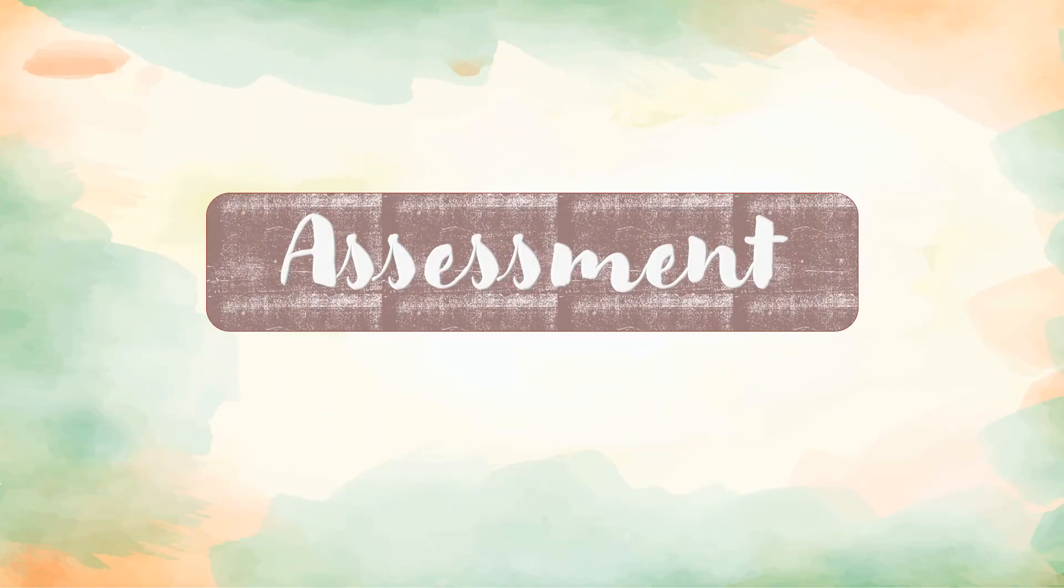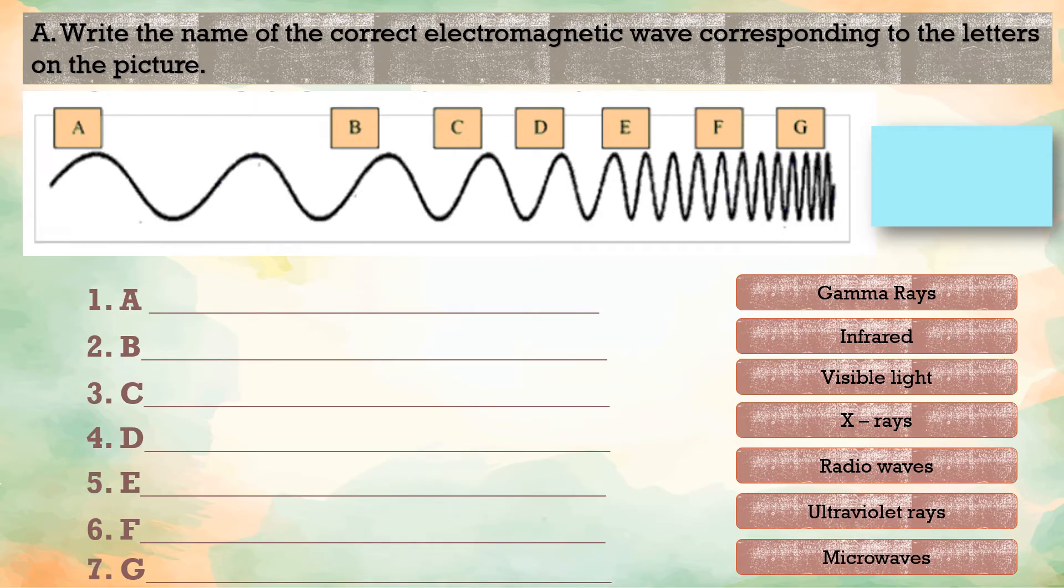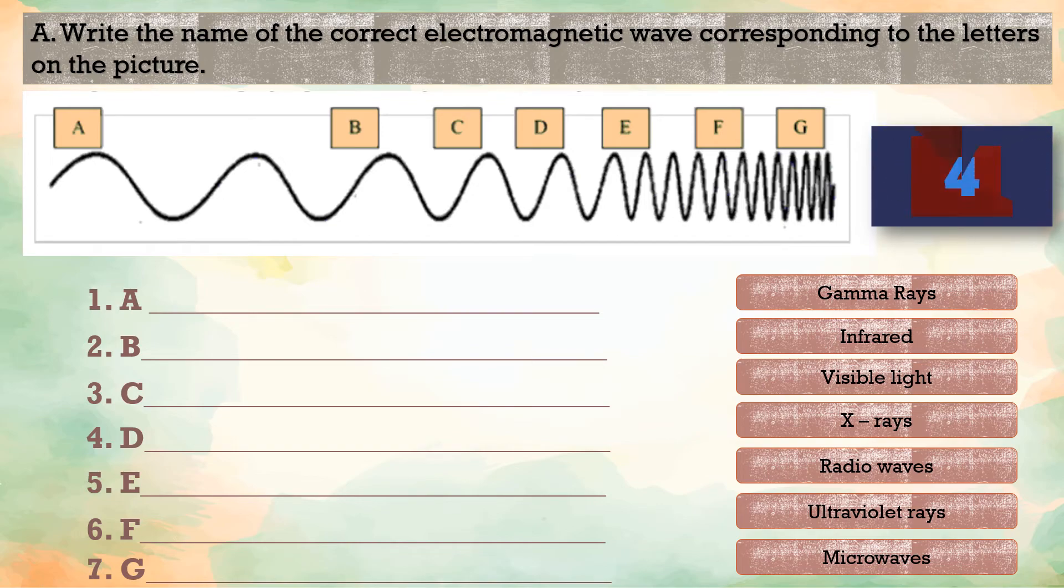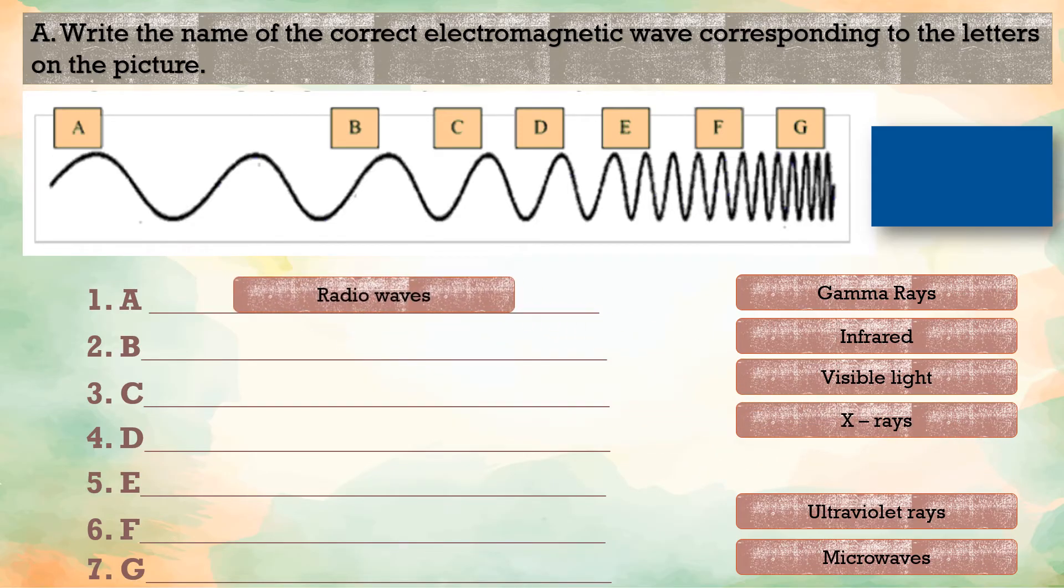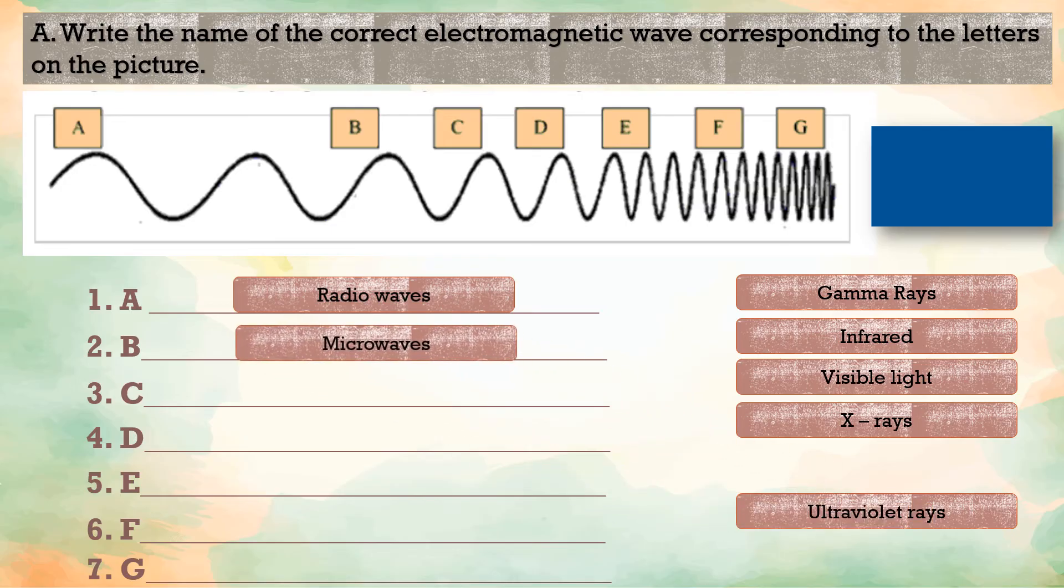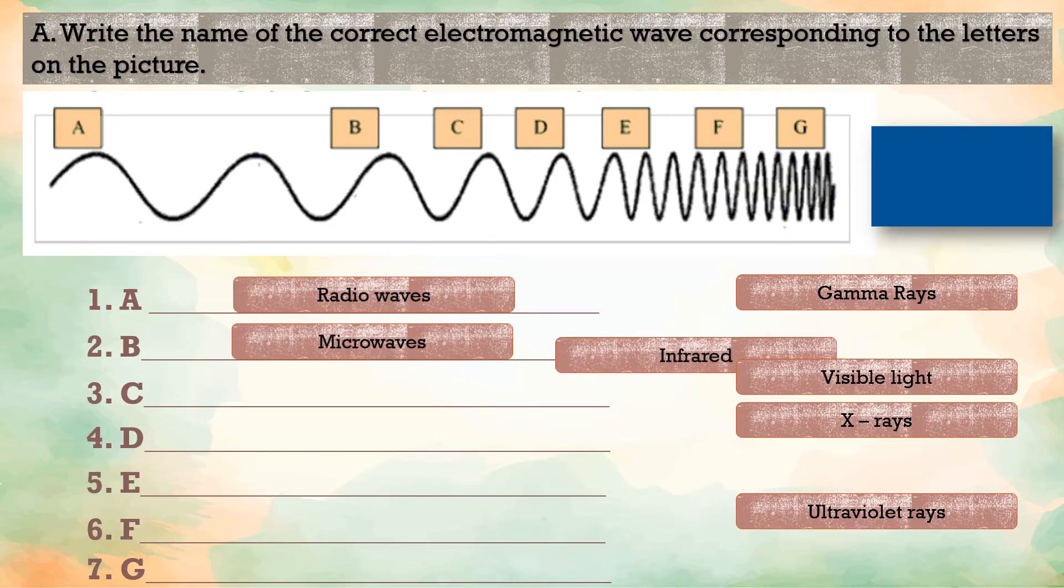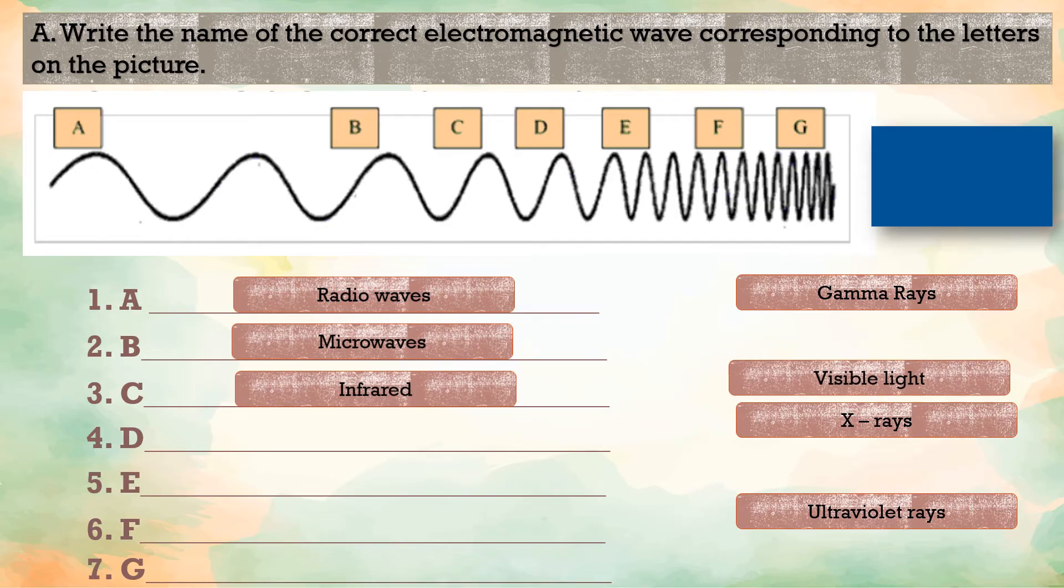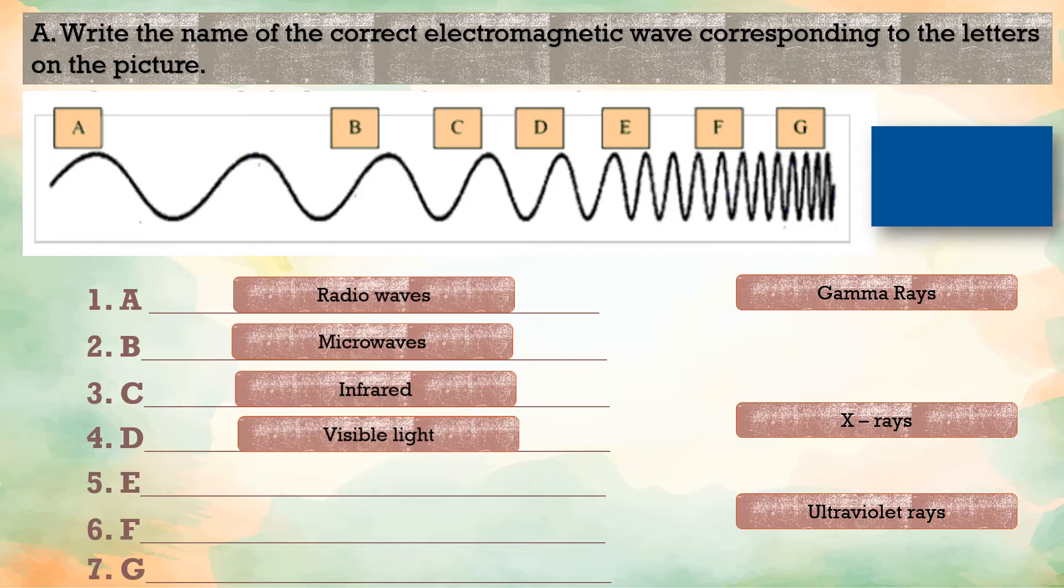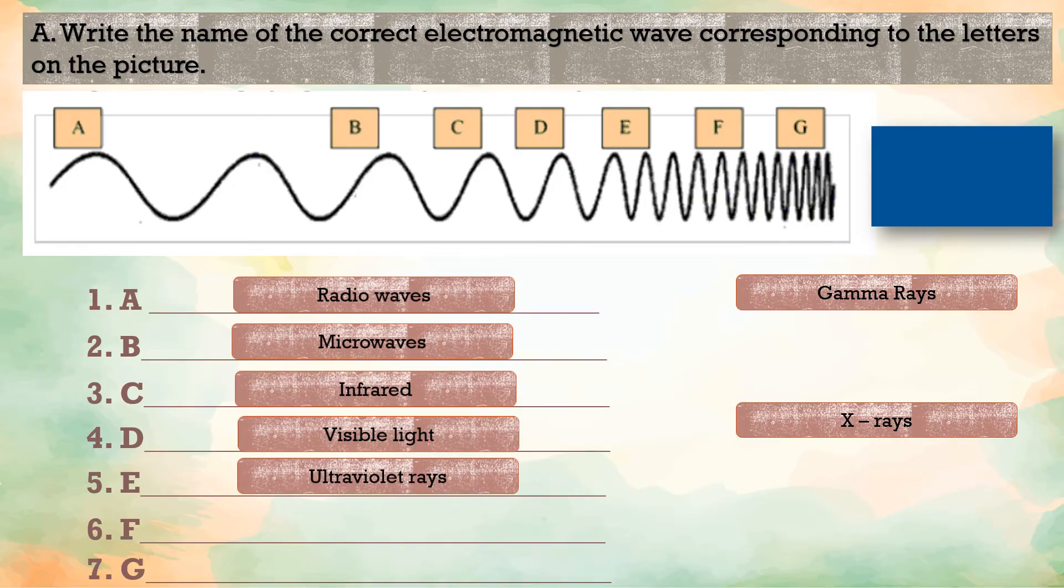Let us now proceed with the assessment. The assessment is divided into two parts. Letter A, write the name of the correct electromagnetic wave corresponding to the letters on the picture. Let us now check learners. Letter A, radio waves. Correct? Letter B, microwaves. Letter C, infrared. Letter D, visible light. The fifth one is ultraviolet rays. Letter F, X-rays. And finally, gamma rays. That's nice learners!